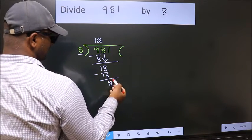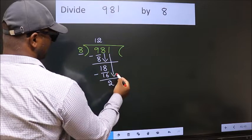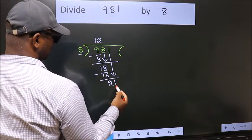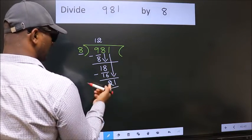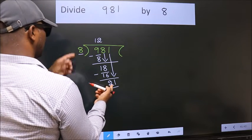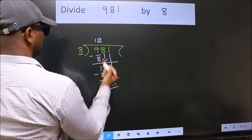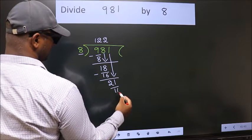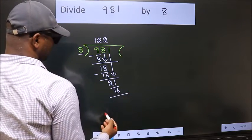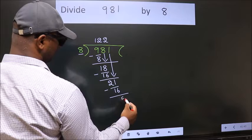After this bring down the beside number. So 1 down. So 21. A number close to 21 in the 8 table is 8 twos, 16. Now we subtract. We get 5.